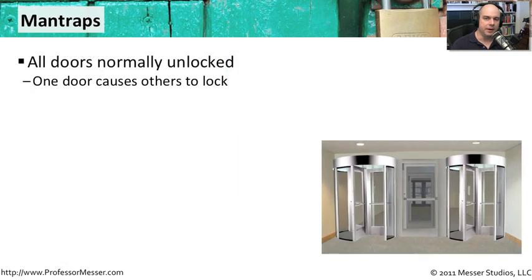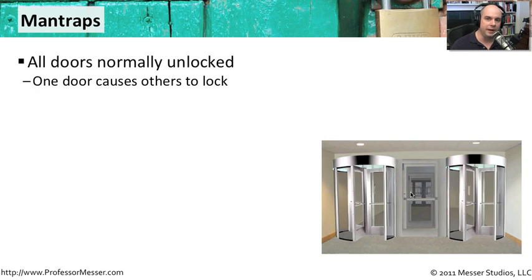Very secure areas, like financial organization data centers, or data centers that are very large — maybe access points for the internet — will have things like man traps inside of them. These man traps are restrictions to allow or disallow access to the area. Usually these man traps put you in a holding area so that you first have to walk through a system, be validated, and then you're able to continue through into the other area.